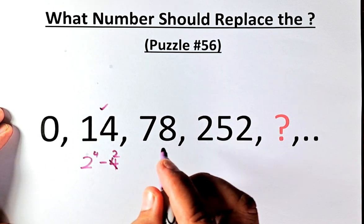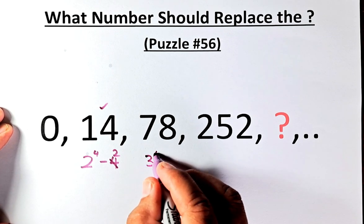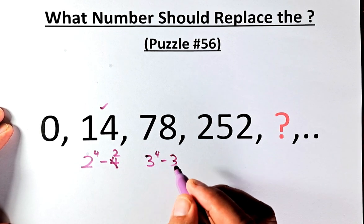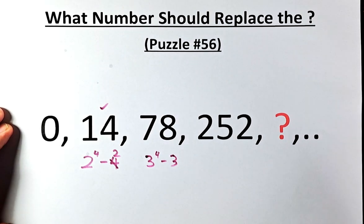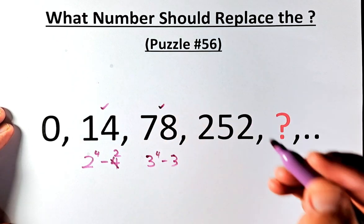Similarly, for 78 is going to be 3 to the power of 4 minus 3. So 3 power 4, 3 to the power 4 is going to be 81, 81 minus 3 and that will give us 78.